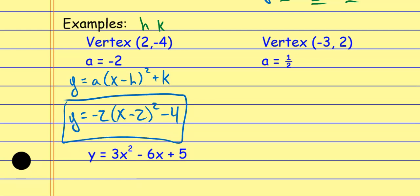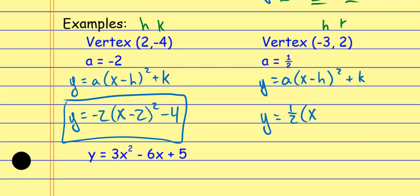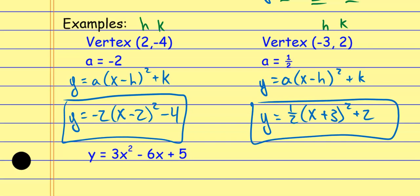Same kind of thing for the next one — I plug it into the format y equals a times x minus h squared plus k, and that minus sign acts like an opposite sign. The a value is one half. My hk is right here: h is negative 3, k is positive 2. But in the formula I do the opposite of h, so I do a plus 3 here. And the k value just stays the way it's supposed to be — plus 2.